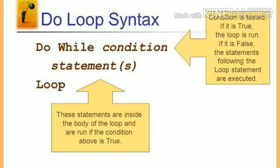The first one is do while loop statement. In the case of do while loop, it is used to execute the statements repeatedly as long as the condition is satisfied. Its syntax is: do while condition, then statement, then loop. Here, how the program executes: first the condition is tested. If it is true, then the loop runs. If it is false, the statements following the loop are executed. The statements are given inside the body of the loop and run if the condition above is true.